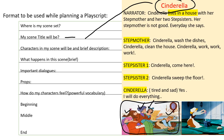Characters in the scene are Stepmother, Stepsister 1 and 2, and Cinderella. What happens in the scene? In the scene, Cinderella lives in her house with her stepmother and her two stepsisters. She is cleaning the house and the stepmother and sisters are giving her a list of works to complete. The dialogues are: Cinderella wash the dishes, come here, sweep the floor.